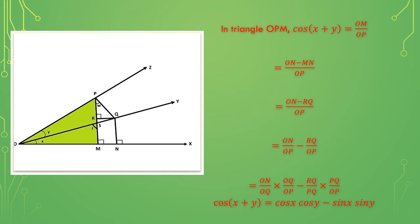In triangle OPM, we have cos(x + y) equals OM by OP, as cos means adjacent by hypotenuse. OM can be written as ON minus MN. But we can see that MN is same as RQ. Now simplifying, we can write it as ON by OP minus RQ by OP.